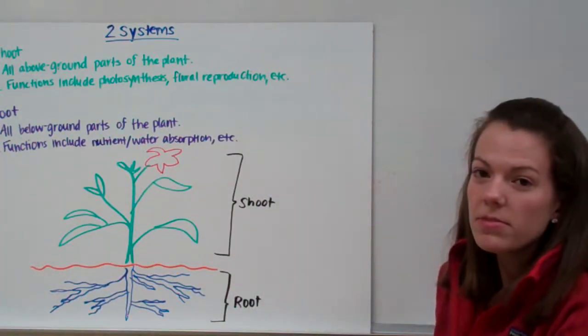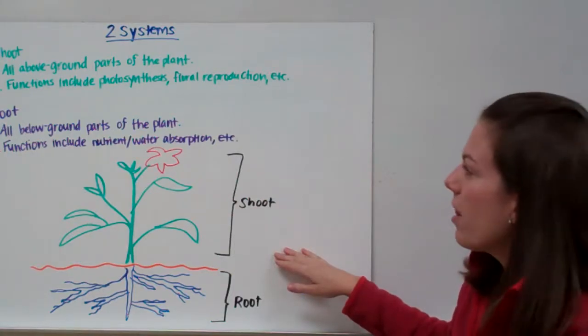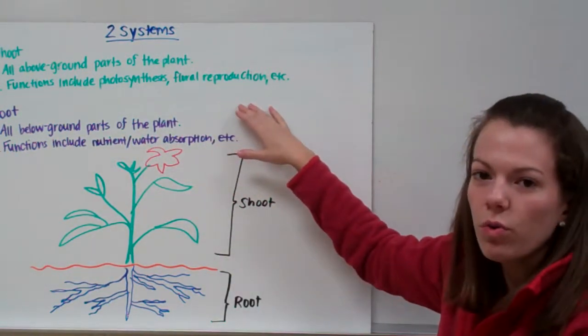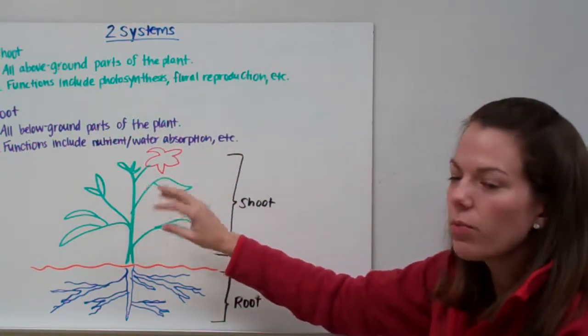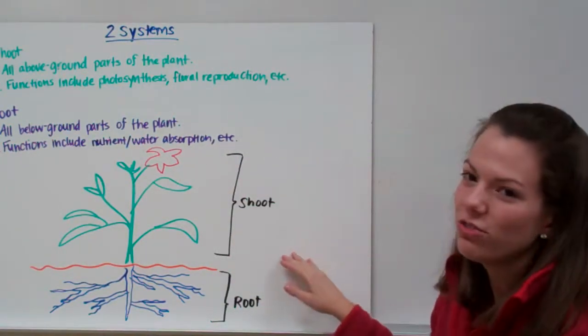We have two systems of a plant. We have the shoot, which comprises all of the above-ground elements. And the functions of the shoot include photosynthesis, floral reproduction, and other functions. So we have different tissues that are working together to make different organs to make what we call the organ system of the plant, the shoot.